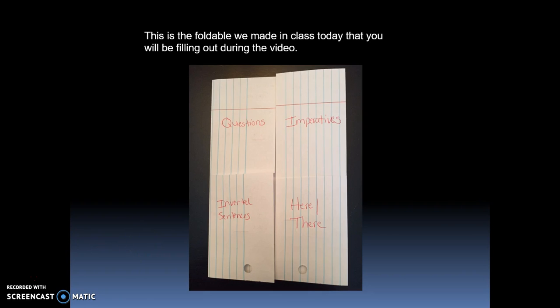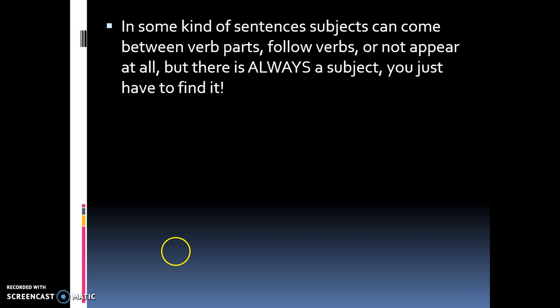We made this foldable in class today. It is a four-window-pane foldable with our four topics on it: questions, imperatives, inverted sentences, and here/there. You should have that out with you. If you forgot it at home, please take a minute and recreate it.